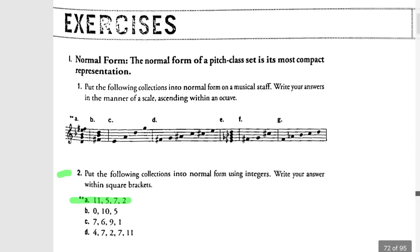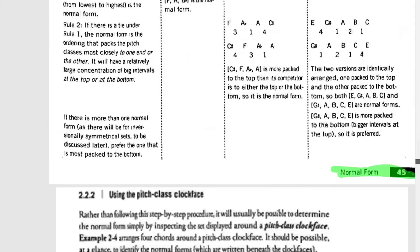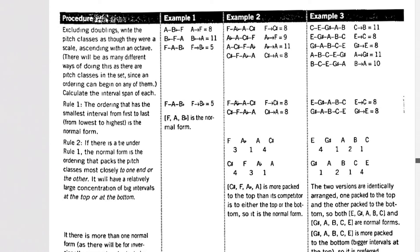That's most of what you need to know to complete your homework assignment. I do want to touch on one other possible case that some of you may have been asking yourselves about. You might be asking, what about if the boundary interval is the same between two different orderings of the pitches? Go back to example 2-3. Strauss talks about what to do in this situation. So far in this video, we've only been talking up through rule 1. Excluding doublings, write the pitch classes as though they were a scale ascending within an octave. Calculate the interval span of each. The ordering that has the smallest interval from first to last is the normal form.